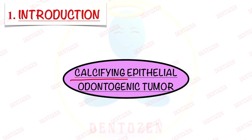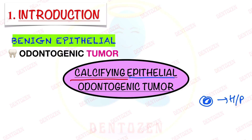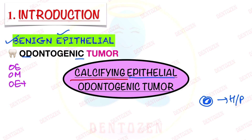The word 'calcifying' says that this tumor has a lot of calcifications which can be seen under the microscope histopathologically, and the word 'epithelial' says it arises from odontogenic epithelium. So it is a benign epithelial odontogenic tumor. Some odontogenic tumors come from odontogenic epithelium, others from mesenchyme, and others from both. In the classification of odontogenic tumors, calcifying epithelial odontogenic tumor is in the first category — it arises from odontogenic epithelium, similar to ameloblastoma.